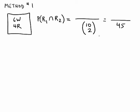Now we're interested in particular in choosing exactly two red balls, and we don't care which two they are or which order they come in. We have four red balls in the box and we want to choose any two, so that's four choose two. In the numerator we have six white balls and we want to choose zero of those. Four choose two is just six, and six choose zero is one, so the numerator becomes six over 45.